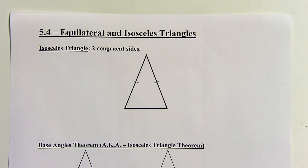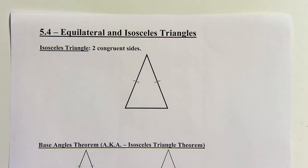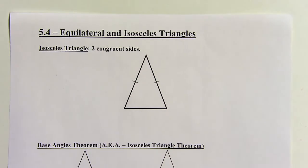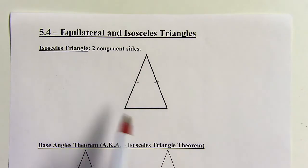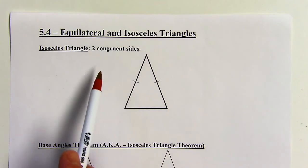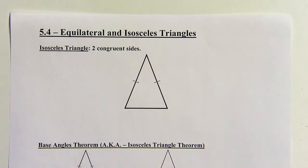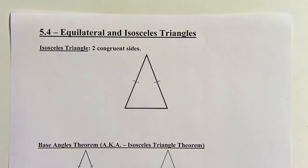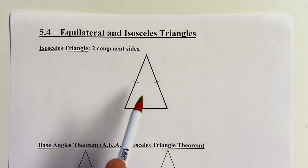Section 5.4 is called Equilateral and Isosceles Triangles. Here we have an isosceles triangle, which means it's a triangle that has exactly two congruent sides. An equilateral triangle is going to have three congruent sides, but we'll get to that in a minute.